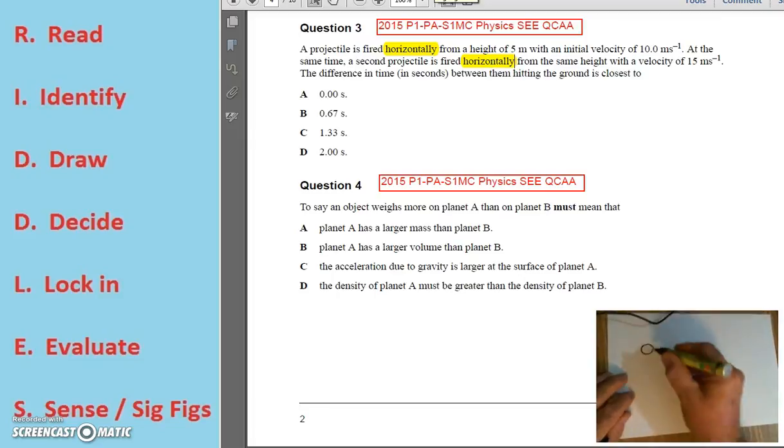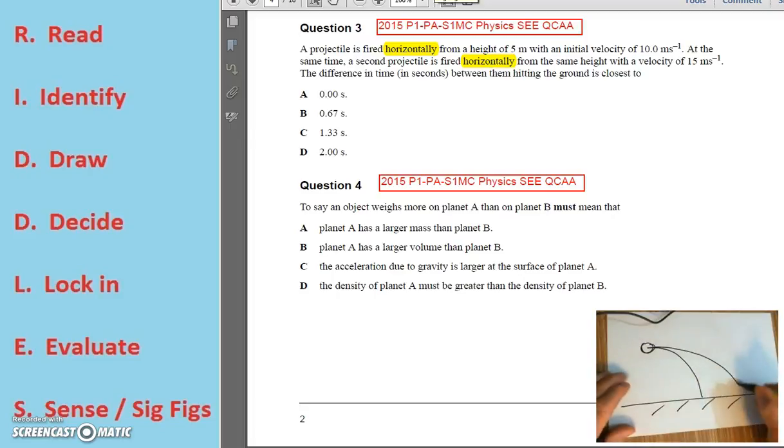One projectile, the one that's fired at 10, will travel like so to hit the ground. The second projectile, which is fired slightly faster, will travel so to hit the ground.